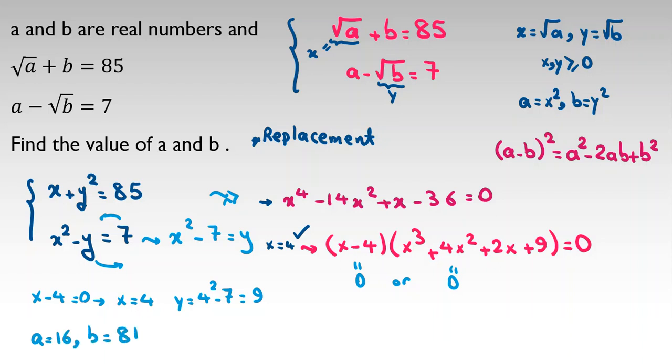We check. Root 16 will be 4, plus 81 will be 85. The first equation will be okay. For the second one, 16 minus square root of 81, which is 9, will be 7. So it is our first answer.